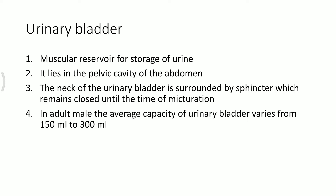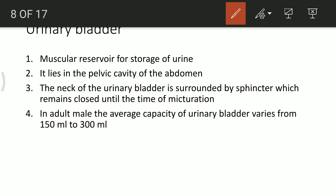The urinary bladder is a pear-shaped, sac-like muscular structure made of smooth muscles, present in the pelvic cavity of the abdomen. The neck of the urinary bladder is surrounded by a sphincter that controls urine movement. In an adult male, the average capacity of the urinary bladder varies from 150 mL to 300 mL.